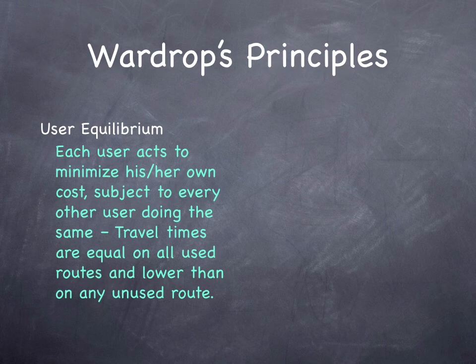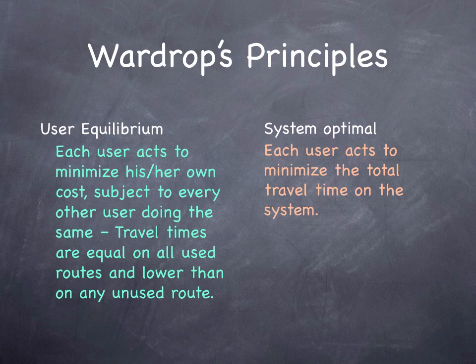You might notice that this does not guarantee a minimal travel time on the system as a whole. If everybody is behaving in their own best interest, there's no guarantee that the total system travel time will be at a minimum. The system optimal principle says each user acts to minimize the total travel time in the system.